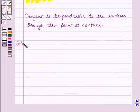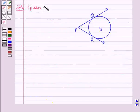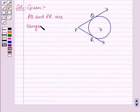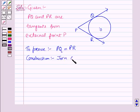Now we will start with the solution. First we have to prove that the lengths of the tangents drawn from an external point to a circle are equal. Given that PQ and PR are tangents from an external point P. To prove: PQ is equal to PR. Construction: join OQ, OR and OP.